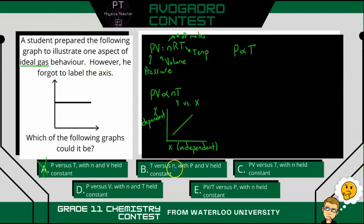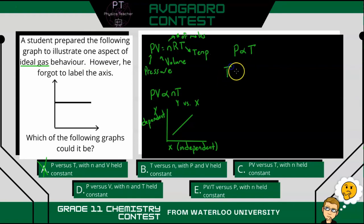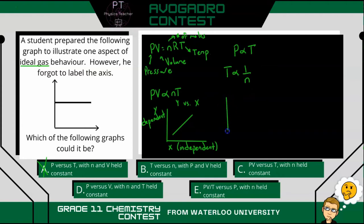Next is temperature versus the number of moles. If we rearrange this proportionality, we get temperature inversely proportional to the number of moles. So as the number of moles increases, temperature is going to decrease. We get an inverse relationship — something that looks like a hyperbolic curve. So not B.